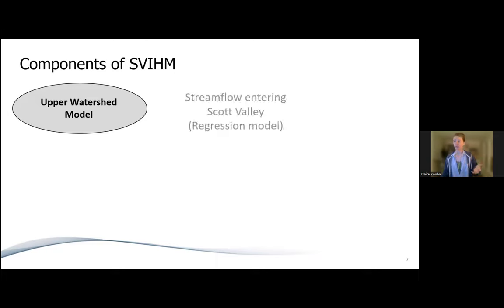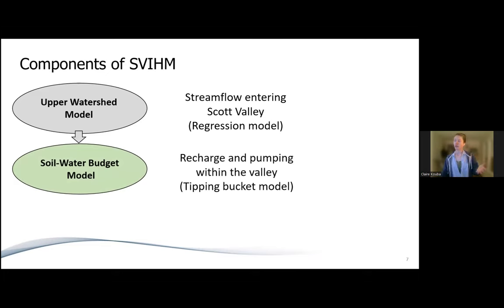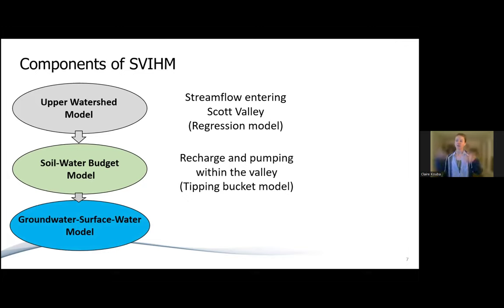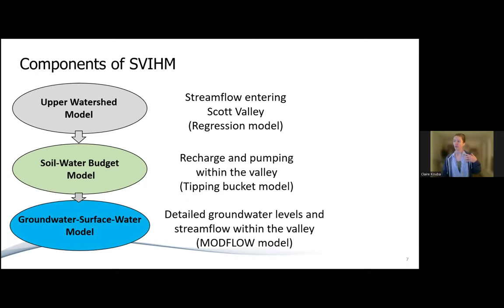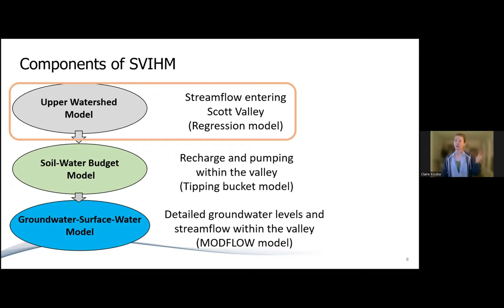The model has three components. The first is the upper watershed model, used to estimate stream flow entering Scott Valley — it's a linear regression model, a simple statistical tool. We then use that information to calculate components in the soil water budget model, used to estimate recharge and pumping within the valley using a tipping bucket approach. Finally, we use that information to run our groundwater-surface water model, which provides detailed estimates of groundwater levels and stream flow within the valley. We use software called ModFlow, written and maintained by the U.S. Geological Survey.